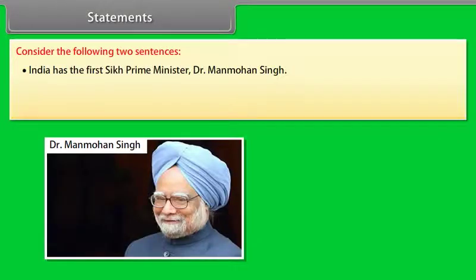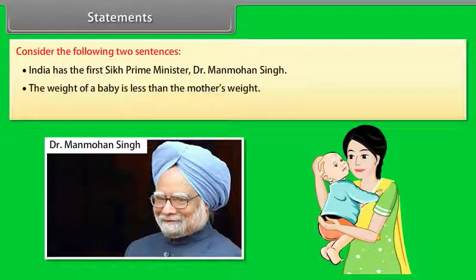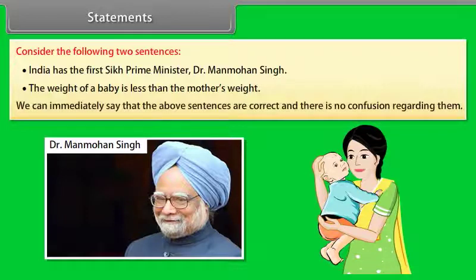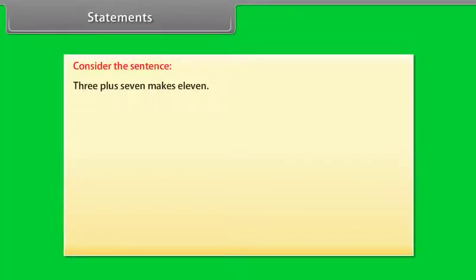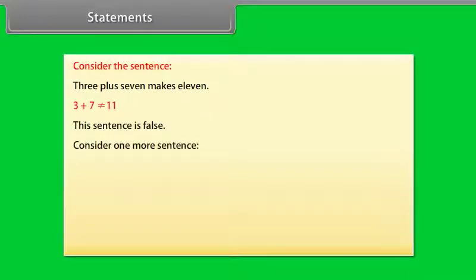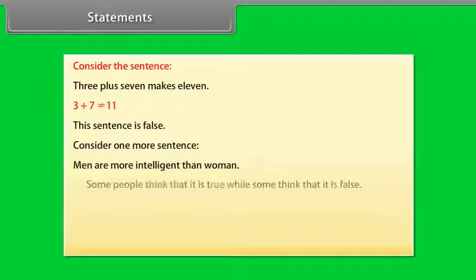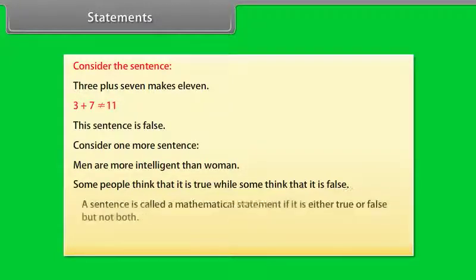The weight of a baby is less than the mother's weight. We can immediately say that the above sentences are correct and there is no confusion regarding them. Consider the sentence: 3 plus 7 makes 11. This sentence is false. Consider one more sentence: men are more intelligent than women. Some people think it is true, while some think it is false. Now we define a mathematical statement: a sentence is called a mathematical statement if it is either true or false, but not both.